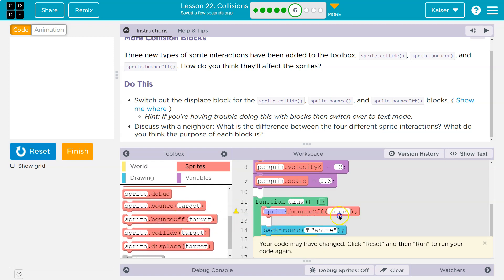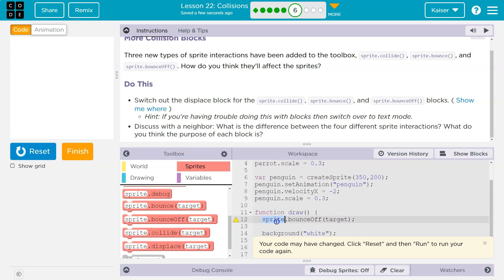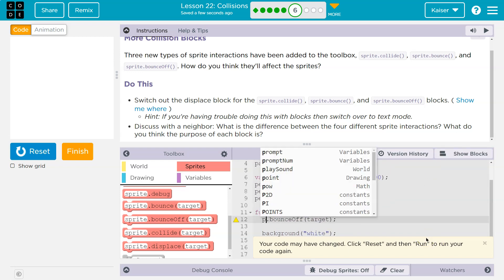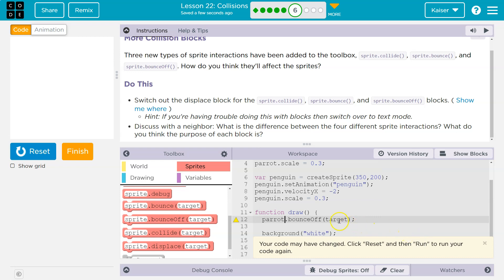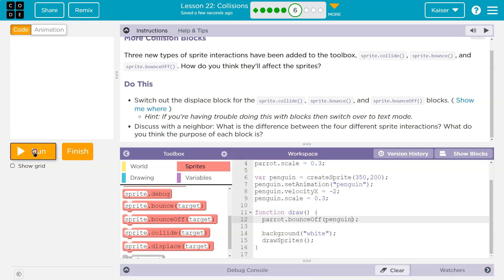And let's try bounce off. And what they mean by text is I can just go ahead and click on that text mode button. Instead of the word sprite here, what if I try carrot, and I'm going to bounce off the penguin. Cool. Let's go ahead and give that a try.